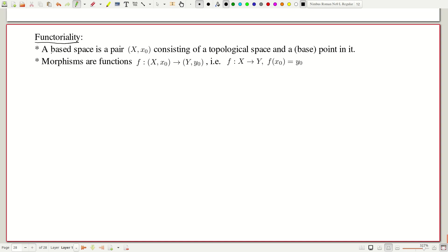The correct category is what is called a based space whose objects are pairs. It consists of a topological space which is X and a base point in it. And morphisms are functions between the topological spaces. Of course, I mean f is continuous as usual, but they take base point to the base point. Other points can go to the base point. There is no problem here.